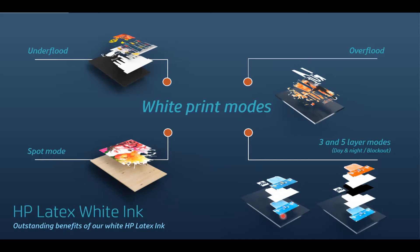Then we get into the five-layer mode, also known as the blackout layer — we print color, white, black, white, and color. This happens in a single pass, all in registration. An example is a glass store sign that says 'in' and 'out' — this allows you to print different images on both the front side and the back side. These are the different modes.